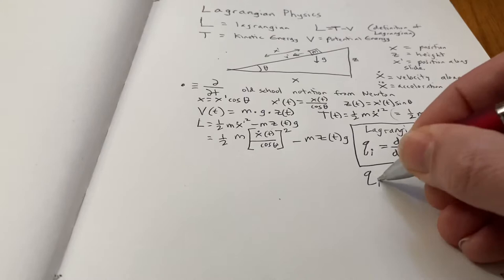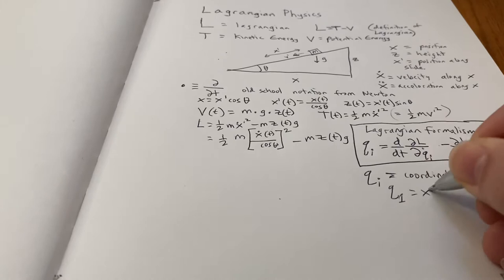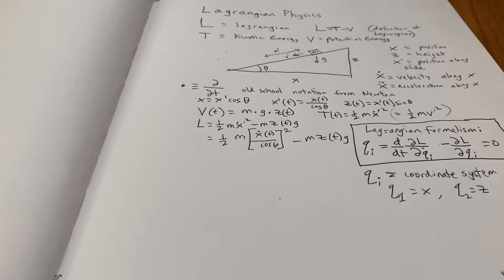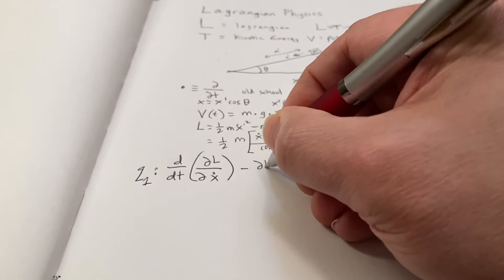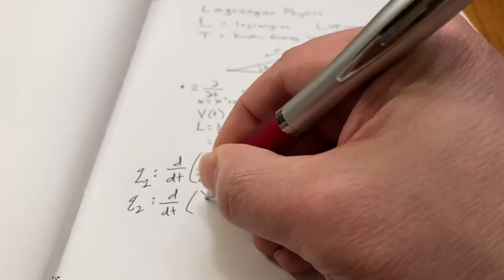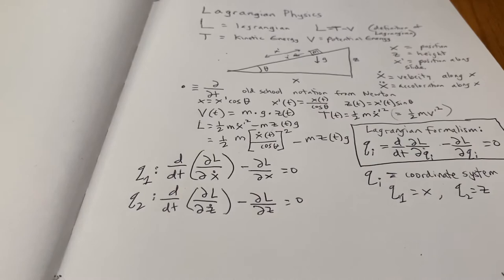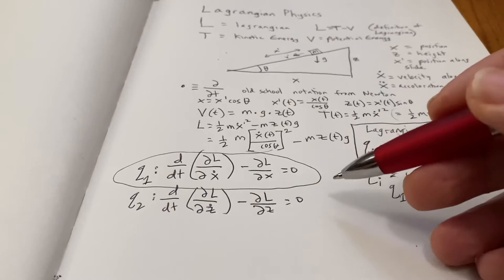So q sub i is actually your coordinate system. And if you're using Cartesian coordinates, then this would be x, y, and z. If you were using spherical coordinates, then it'd be r, theta, and phi. But I'm using rectangular coordinates since it's easiest to solve this with rectangular coordinates on the inclined plane. So q sub 1 is with respect to x. q sub 2 would be with respect to z. So I'm going to write those out as an example. But it turns out you don't actually have to solve the system of two equations and two unknowns. You can solve just one only.